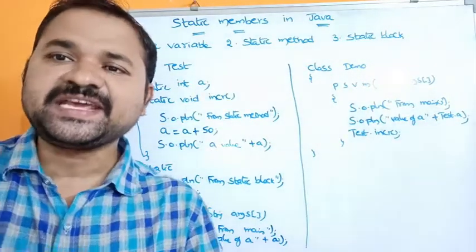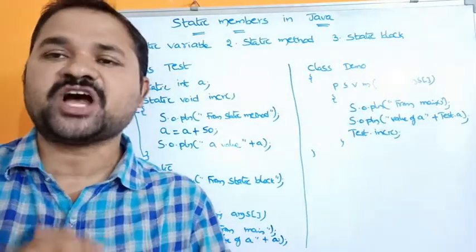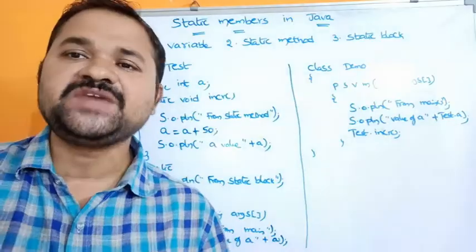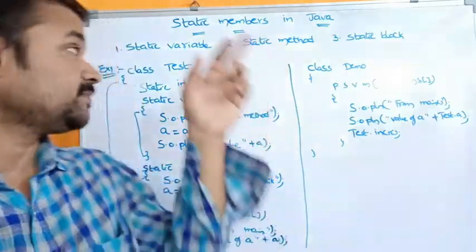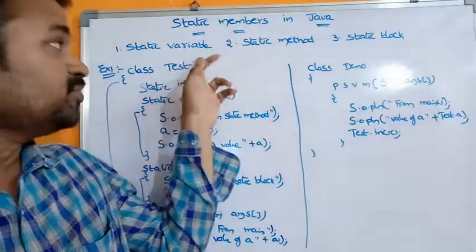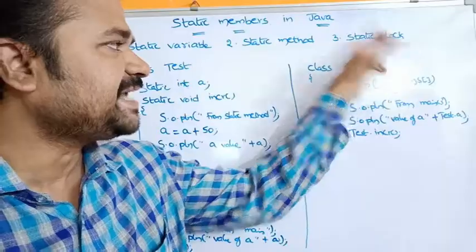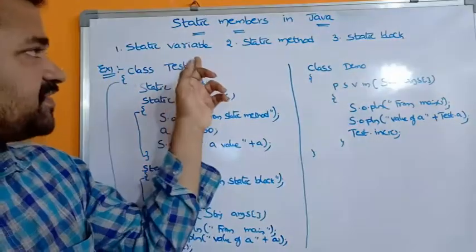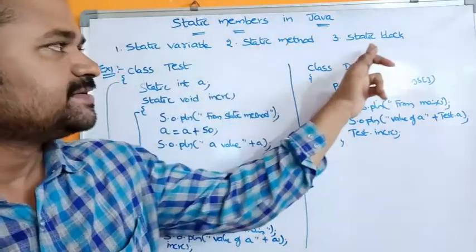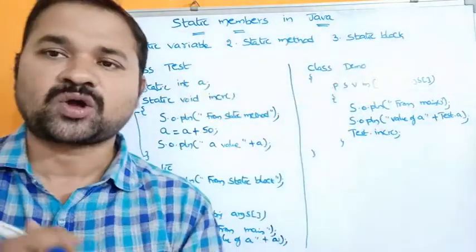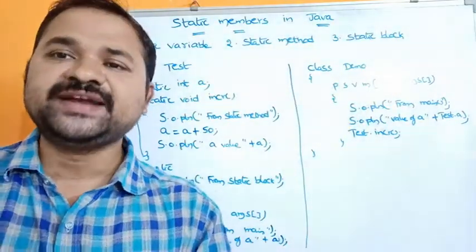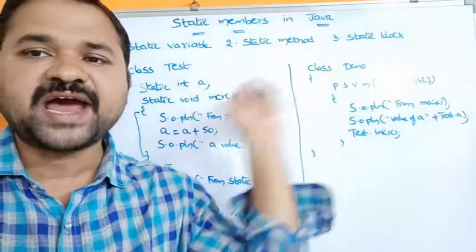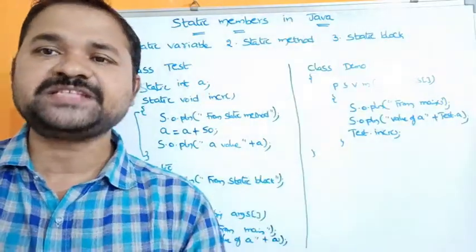Now let's see about static members in Java. We can apply the static keyword or modifier on variables, methods, and a block. So we can have a static variable, static method, and static block. In this video we will discuss what is a static variable, static method, and static block.